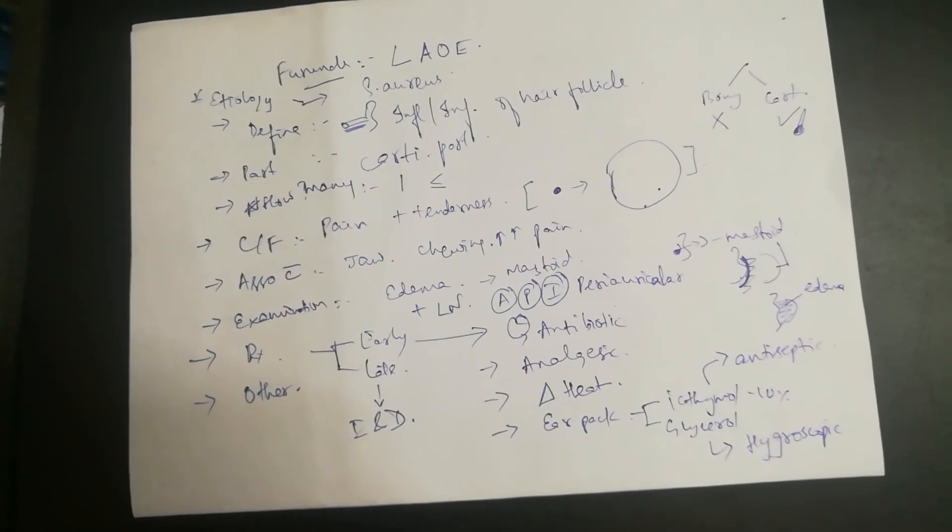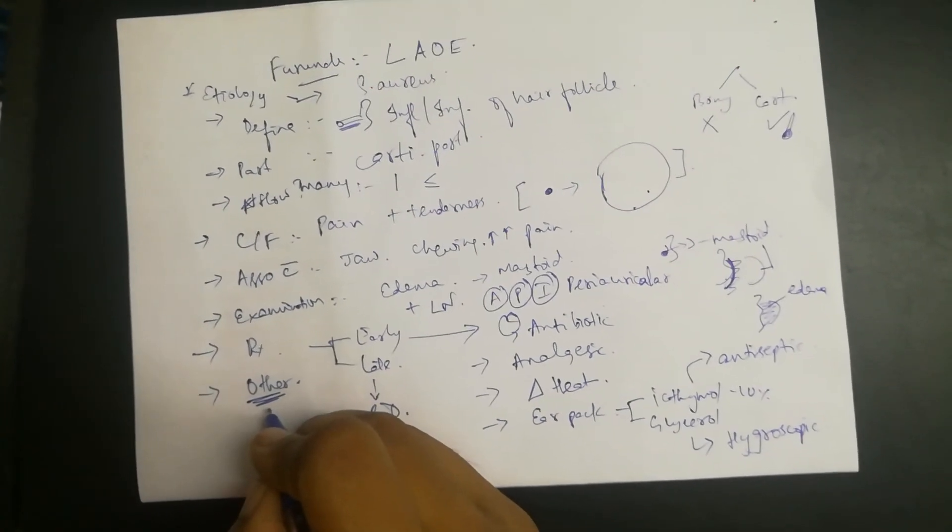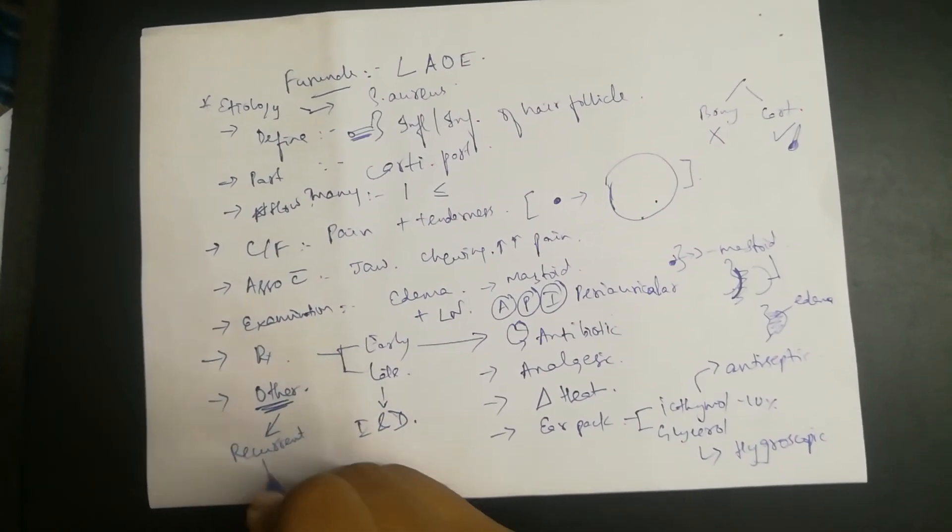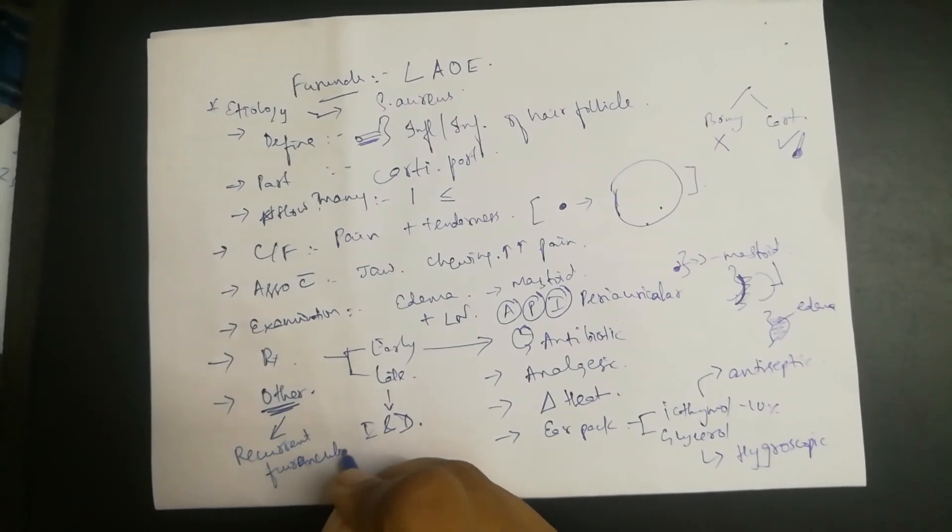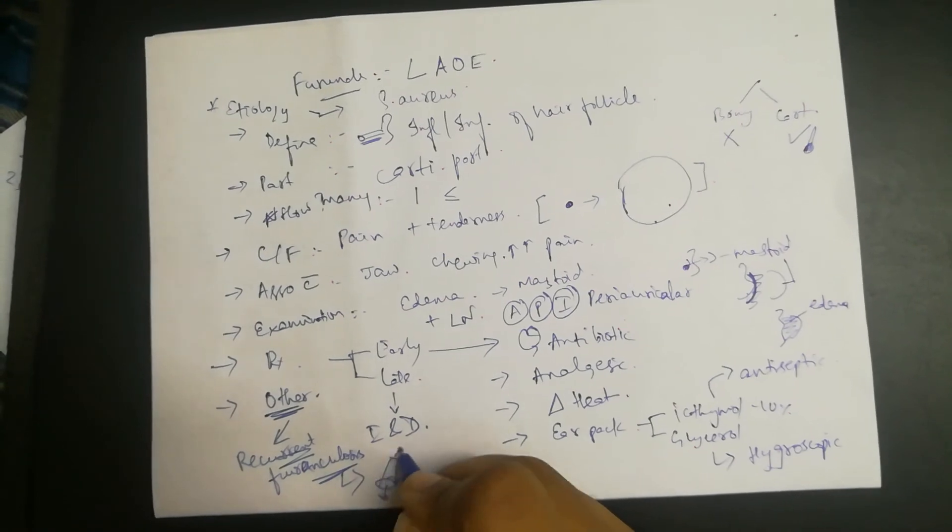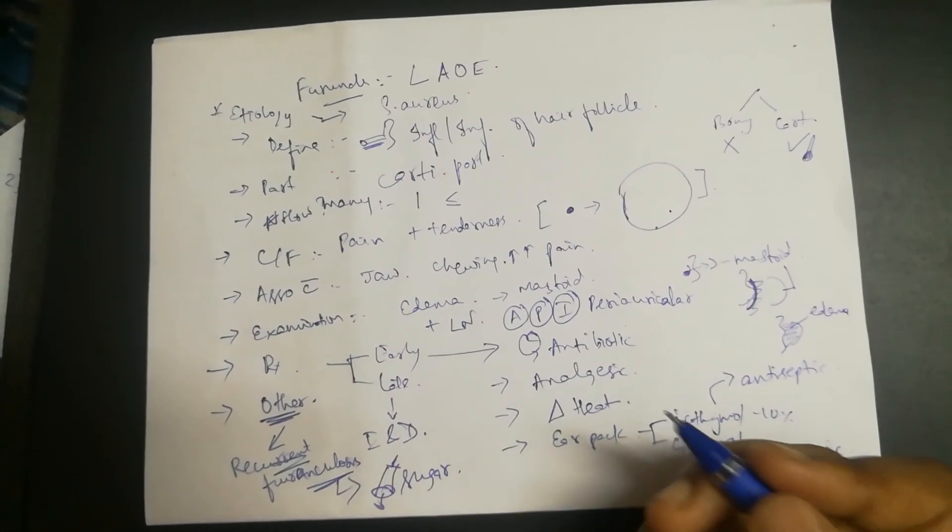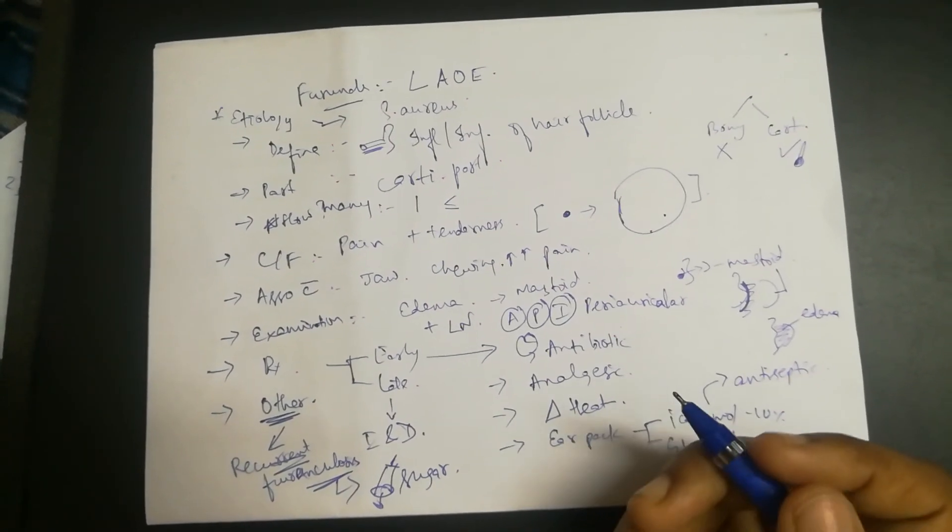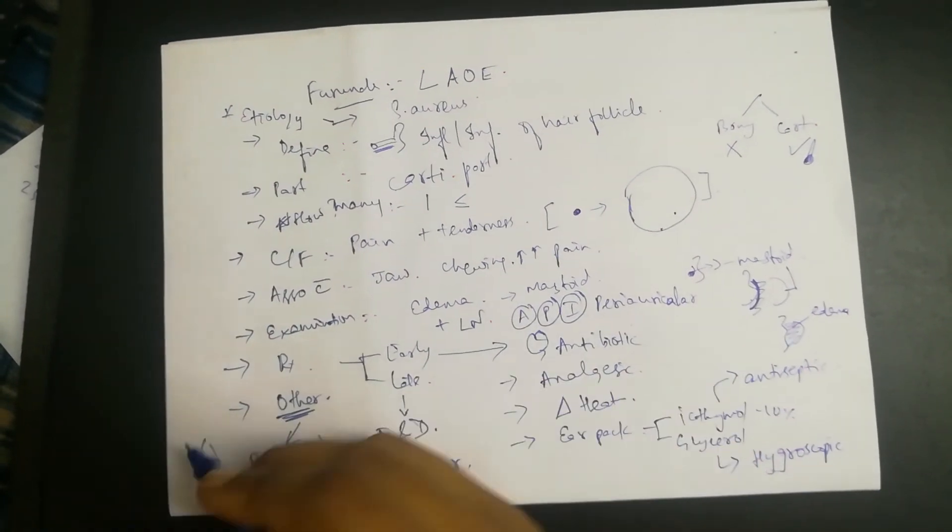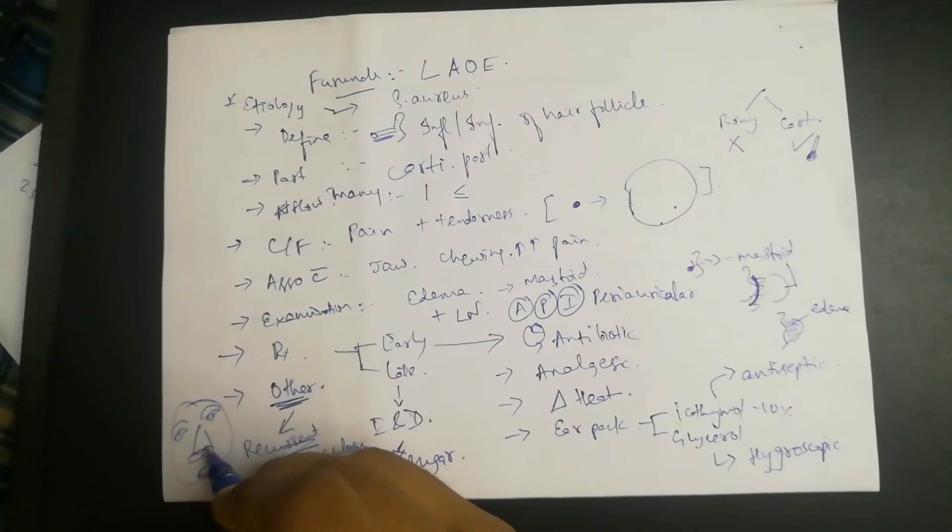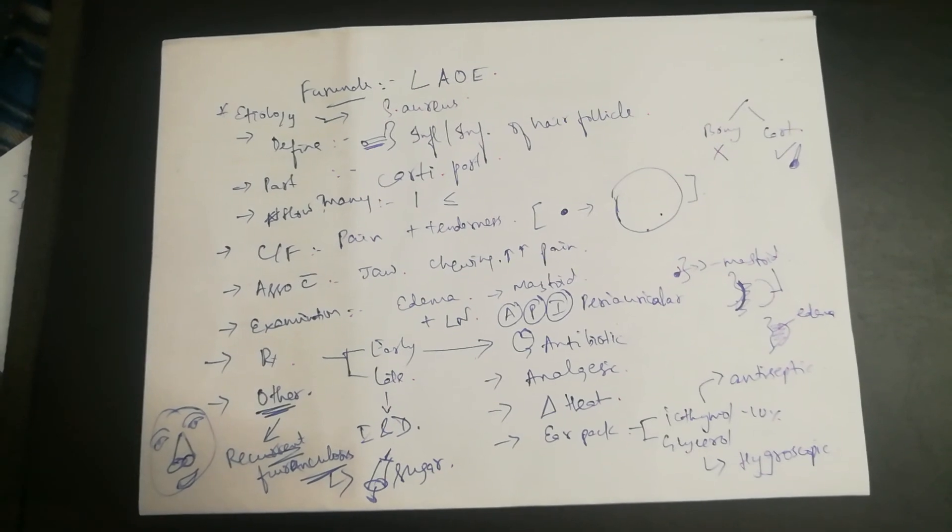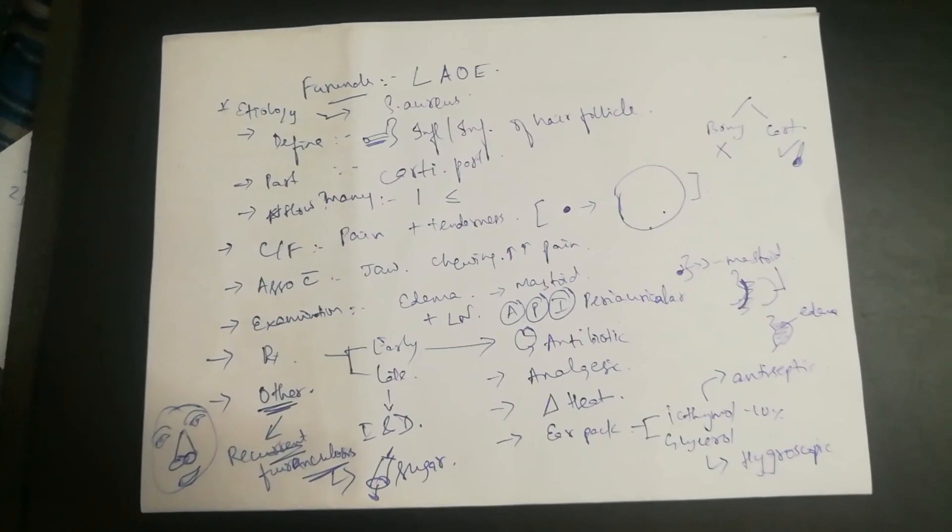There's another form called recurrent furunculosis where it occurs over and over again. If a person has recurrent furunculosis, check their blood sugar level, as they're most probably diabetic. Take care that the nose is free of infection, because Staphylococcus aureus colonizes the vestibule of the nose. Source identification is very important.